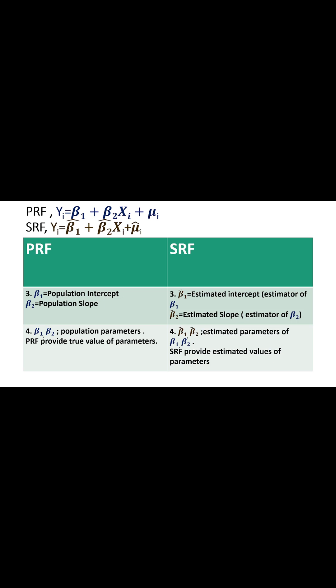Assalamualaikum everyone. In this video we will discuss the difference between population regression function and sample regression function. Population regression function represents the entire group. The population regression function is: y_i = β1 + β2·x_i + μ_i.